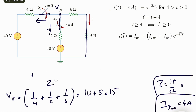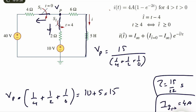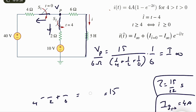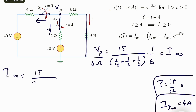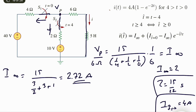Vp equals 15 divided by (1/4 plus 1/2 plus 1/6) volts. The current i∞ is Vp divided by 6 ohms. Computing this, i∞ equals 15 divided by (1/4 plus 1/2 plus 1/6) times (1/6). This is just algebra — you will need to use your calculators in the midterm anyway. i∞ is approximately equal to 2.72 amps.